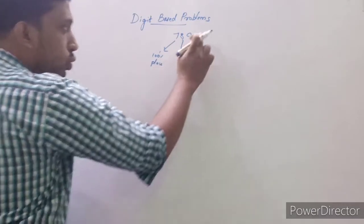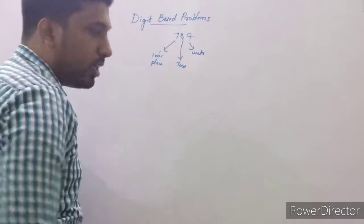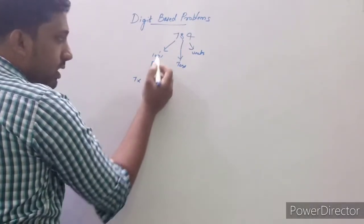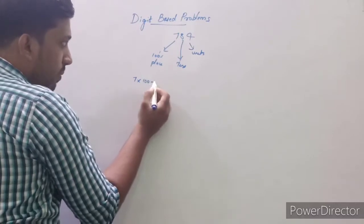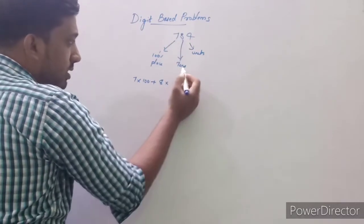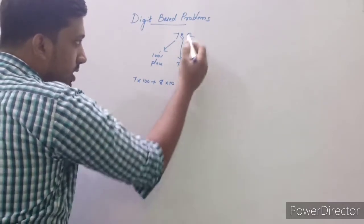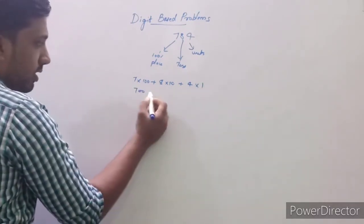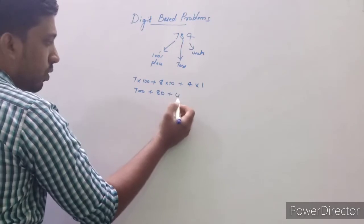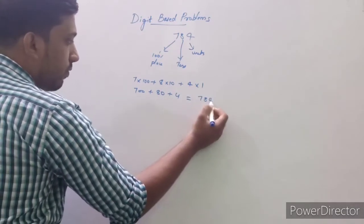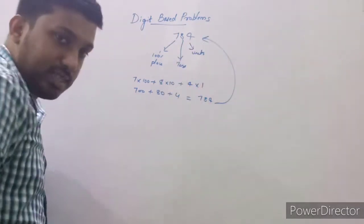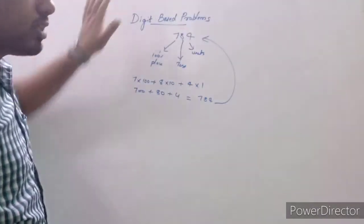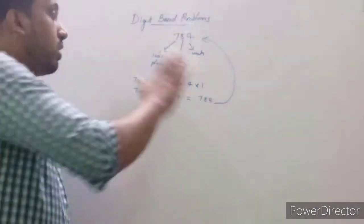So units, tens, hundreds — we can write 784 as 7 × 100 + 8 × 10 + 4 × 1, which gives 700 + 80 + 4 = 784. This is how we understand a particular number in terms of its individual digits.